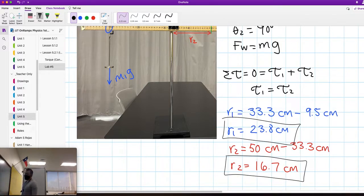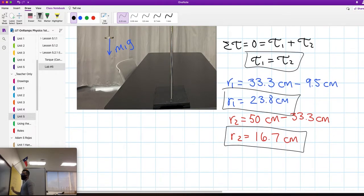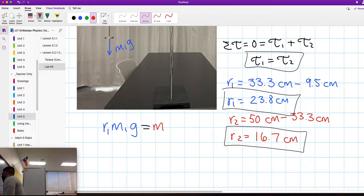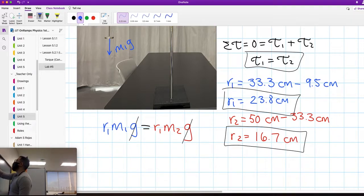This is, I would say, the hardest part of the problem. The force is being applied by means of the weight of the object, so we can say for torque 1, that'll be R1 times mass 1 times acceleration due to gravity equals R2 times mass 2 times acceleration due to gravity. We can cancel acceleration due to gravity, and our equation is very simple now: R1 M1 equals R2 M2.